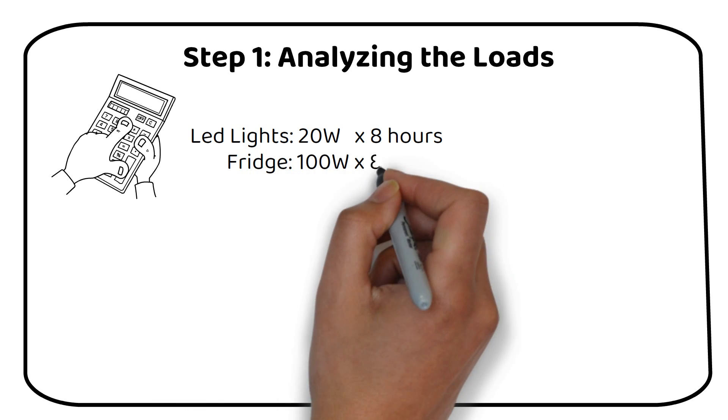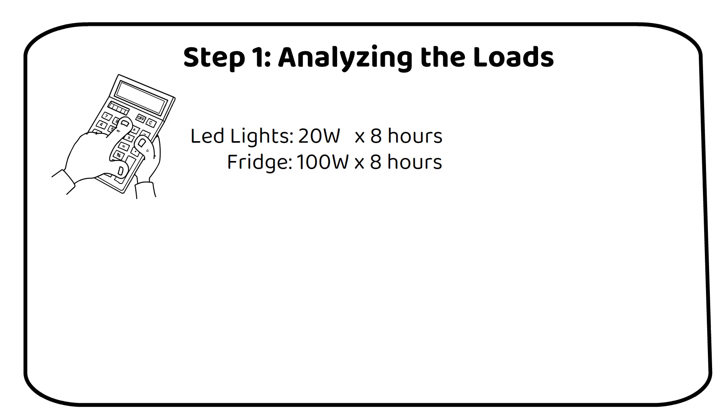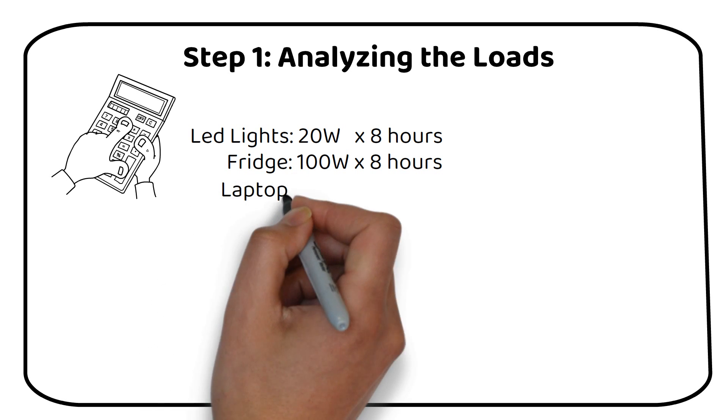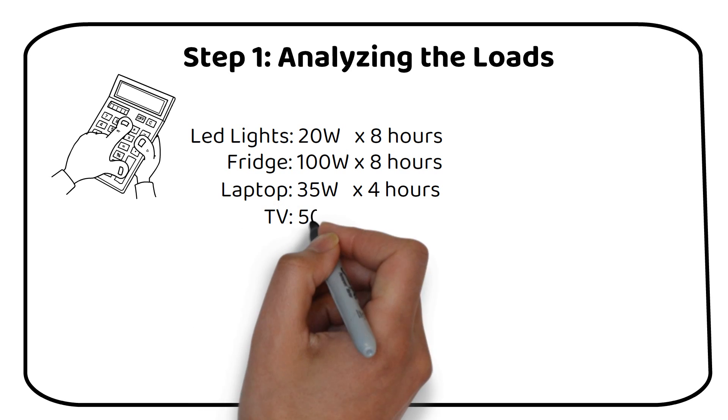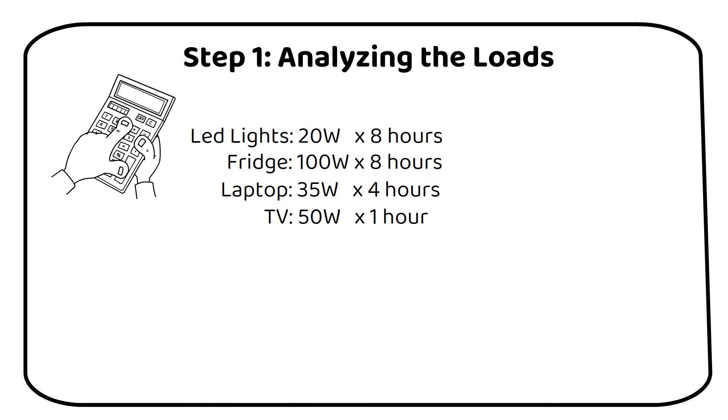Now, let's move on to AC devices. The fridge is 100 watts, with a 30% duty cycle. This means the compressor is active for about 8 hours a day. Remember, if your fridge is in a warmer location, the usage might increase. The laptop charger indicates a power draw of 35 watts and is used for 4 hours daily. Additionally, a 50 watt TV needs to be powered for one hour a day.